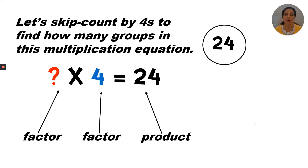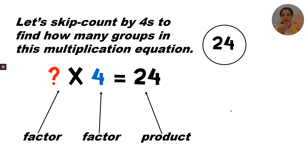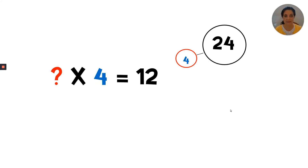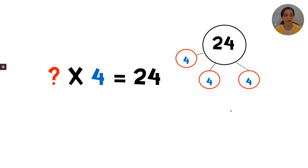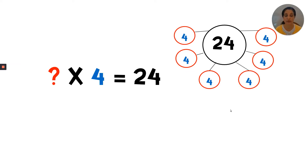Let's skip count by fours to find how many groups in this multiplication equation. We know that there are four in each group, but we need to know how many groups, or how many legs will be on our number bond. Let's count by four: four, eight, twelve, sixteen, twenty, twenty-four. So the answer is six — one, two, three, four, five, six fours equals twenty-four.